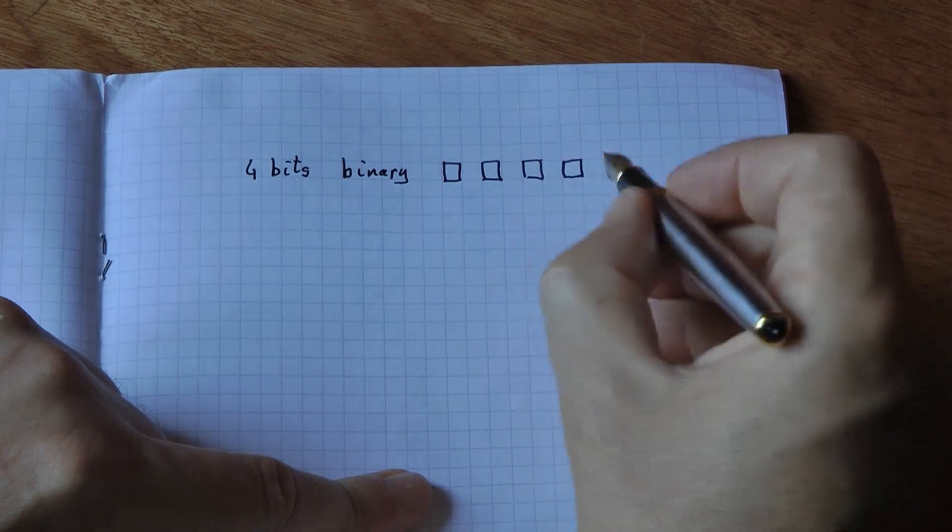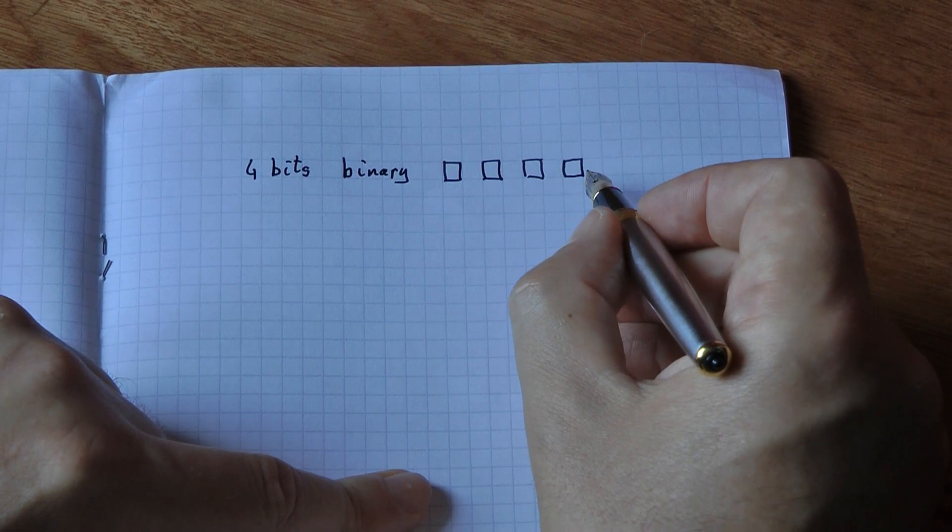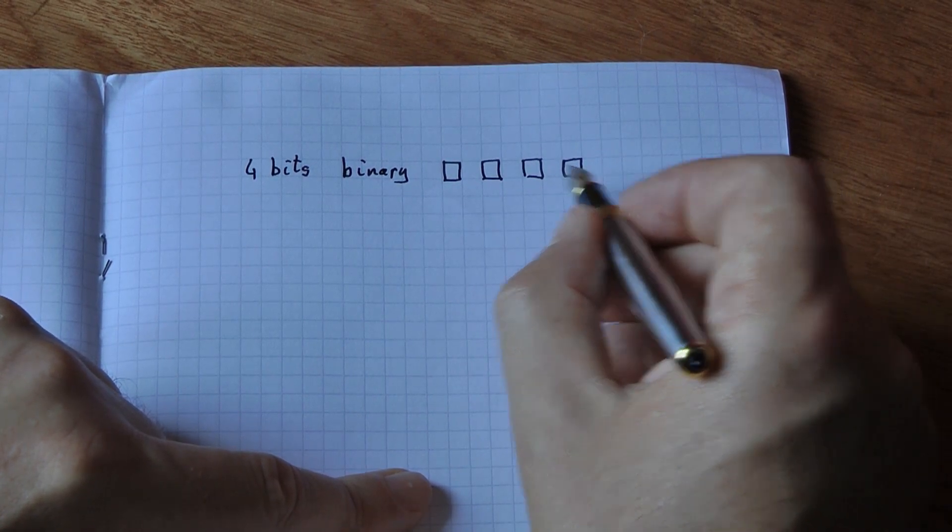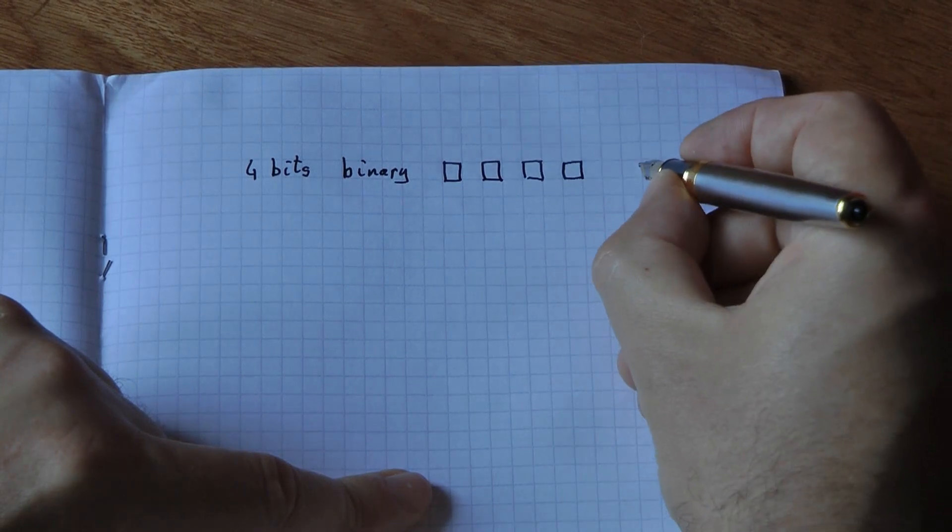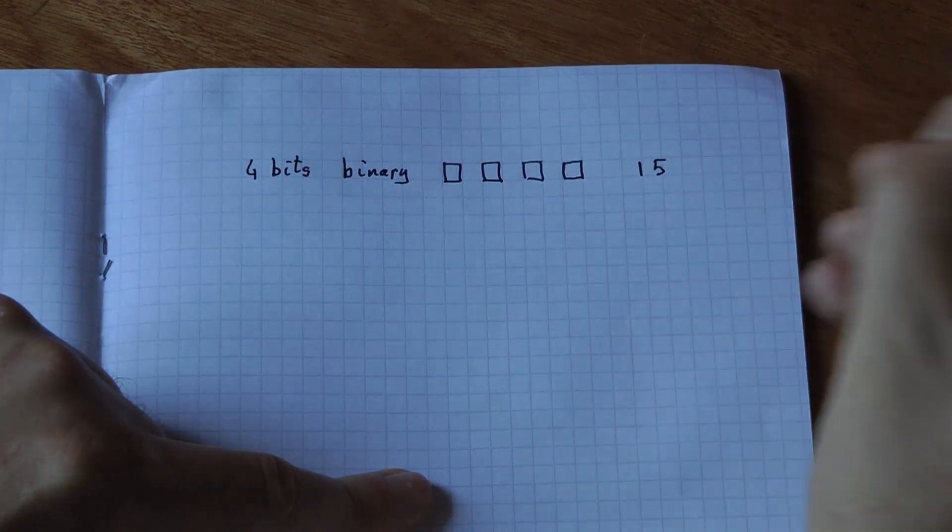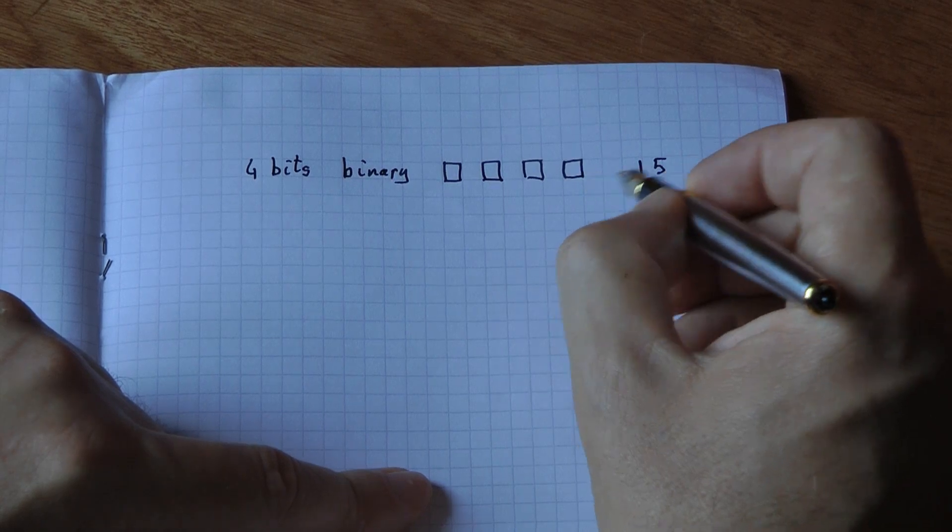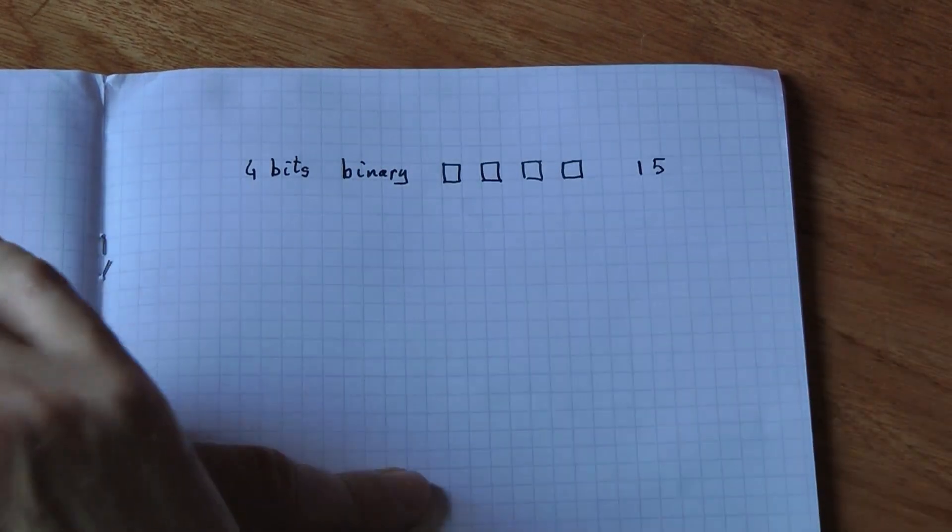Now, the biggest number you can write using four bits is 15. Anything bigger than 15, you would need to add another bit.